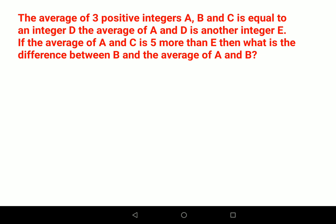We have the average of three positive numbers A, B, and C equals to D. So we have (A+B+C)/3. The average is the sum of all numbers divided by the total elements. We have three elements, so we divide by 3 equals D. From here I can say A+B+C = 3D.